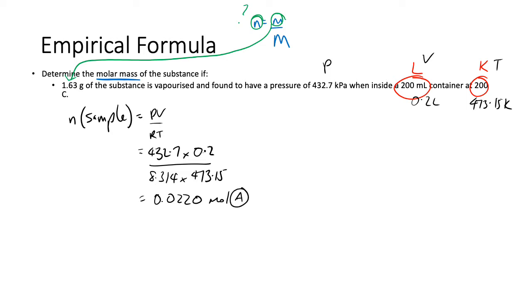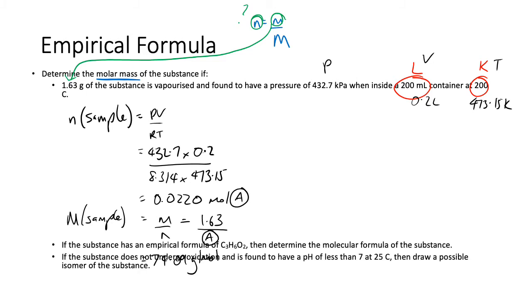Remember all we need is the mass and the number of moles and now we do have both of them so we can work out the molar mass of the sample. Big M of the sample will be equal to m over n because we can algebra, which will be equal to 1.63 over A, which will happen to be 74.09 grams per mole. So 74.09 grams per mole and that's the molar mass of the substance. So A which will be equal to 74.09 grams per mole.